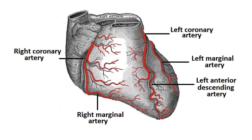A heart attack occurs when the blood supply to the heart muscle is compromised due to impaired blood flow through the coronary circulation, leading to death of a part of the heart muscle.